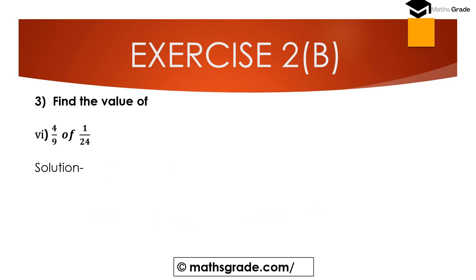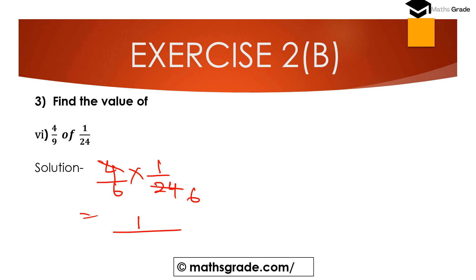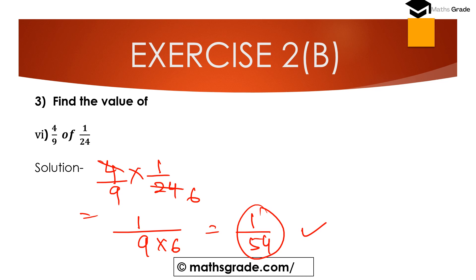Question number 6th part: Find the value of 4 divided by 9 of 1 divided by 24. Here 'of' means multiplication. So 4/9 multiplied by 1/24 — 4 cancels with 24, as 4 sixes are 24, giving 1 divided by 9 multiplied by 6, which equals 1/54. The answer is 1/54.